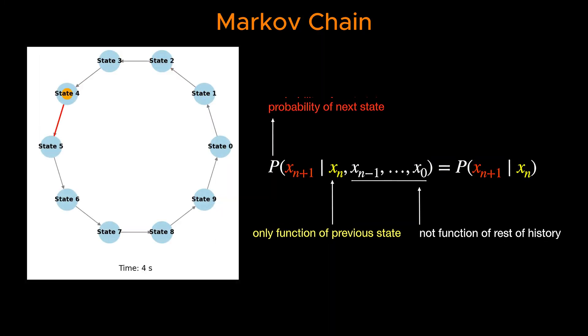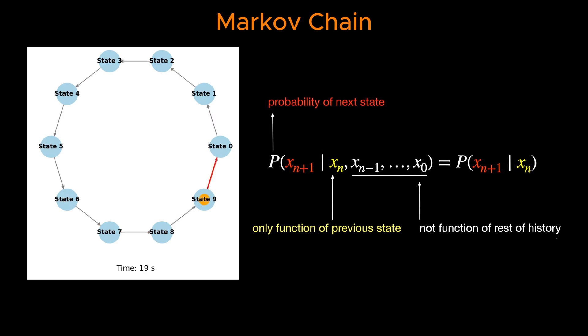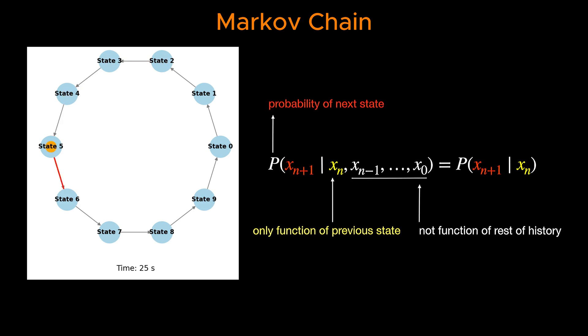This seemingly niche problem led him to the idea of a chain of events where the probability of each event depends solely on the state of the previous event, rather than the entire sequence of past events.